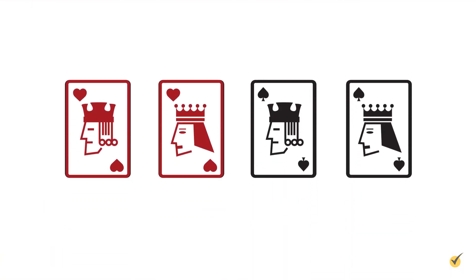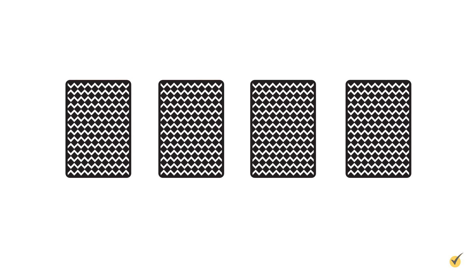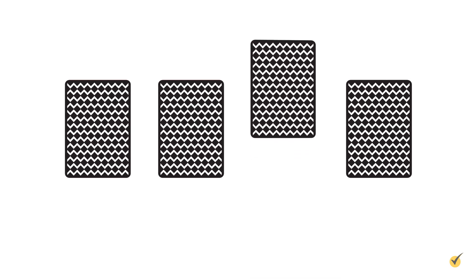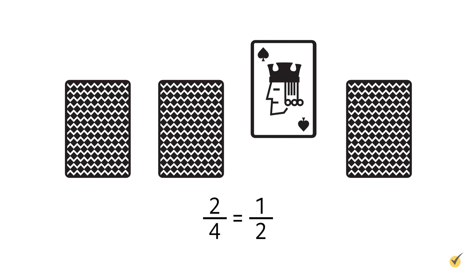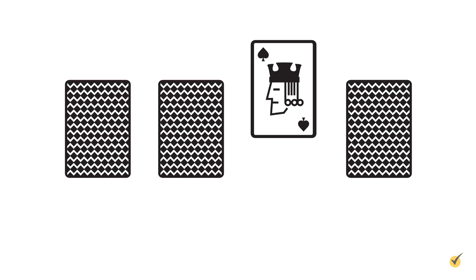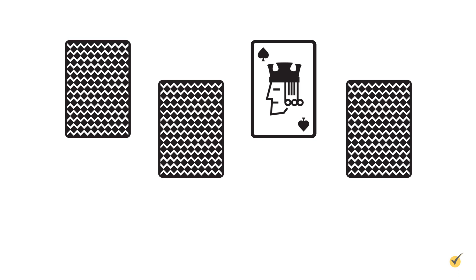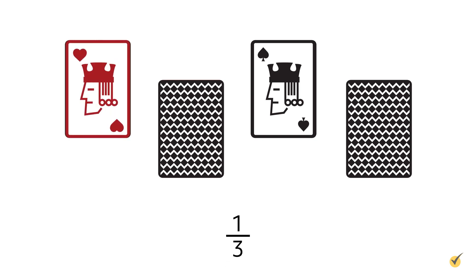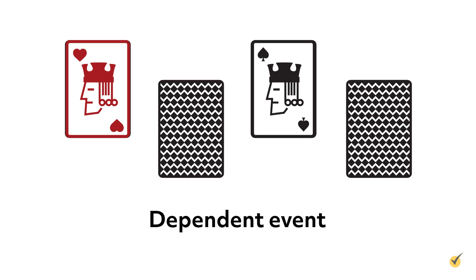Let's say I have four cards: the king and queen of spades and the king and queen of hearts. The cards are placed face down, shuffled, and then one is chosen at random. The probability that the card would be a king is one half because there are two kings and four cards in all. Now, assuming a king had been chosen, if a second card is then chosen at random, the probability of choosing the second king would be one third because there is only one king left and three cards on the table. This second pick is done without replacement because we didn't put the first king back on the table. In this case, the second event would be classified as a dependent event because the probability of the second draw depended on the card removed in the first draw.